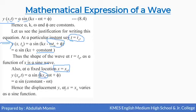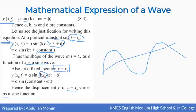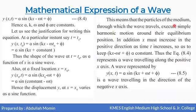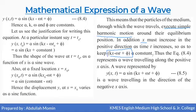Hence the displacement y at x = 0 varies as a sine function, which means the particles of the medium execute simple harmonic motion about their equilibrium position. In addition, x must increase in the positive direction as time increases so as to keep kx − ωt + φ constant. Thus this equation represents a wave traveling along the positive x axis, while y = A sin(kx + ωt + φ) represents a wave traveling in the negative x direction.